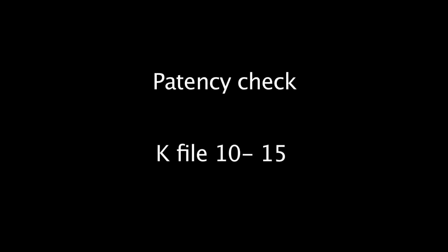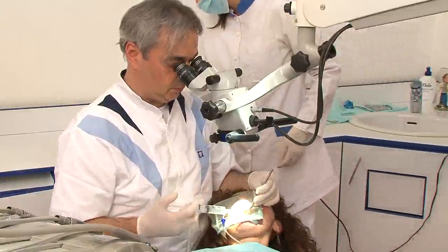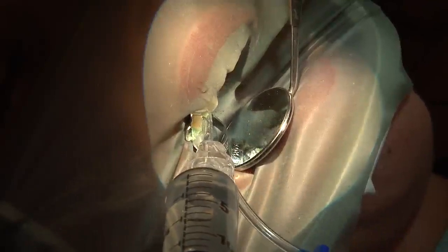The next step is patency check done by a K file size 10 or size 15. In slow watch winding movement, we just check the patency of our canals. Our goal is not to reach the working length or the apical area at this time, just to check if the canals are patent and can accept our rotary files. After patency check, all the debris are taken out with the Indovac.